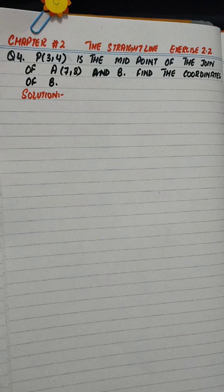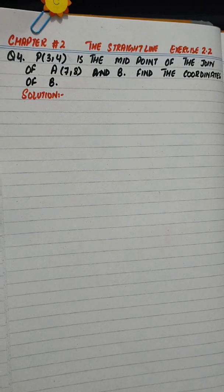Question 4: P(3,4) is the midpoint of the join of A(7,8) and B. Find the coordinates of B.